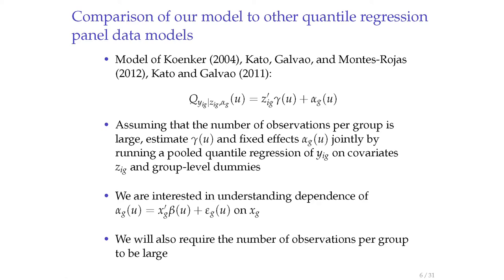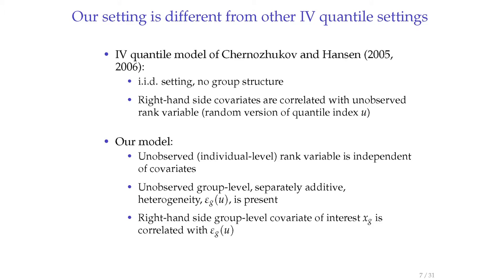We want to understand the coefficient beta. As in the previous literature, we assume the number of observations per group is also large. There is an interesting question of whether the model can be identified with only a finite number of observations per group; the answer seems to be no, following Adam Rosen's paper. But you can impose more structure on the fixed effect to get identification—as in the paper by Stefan and Manuel. Also, even though we have a kind of IV quantile model, our model is very different from Chernozhukov and Hansen.